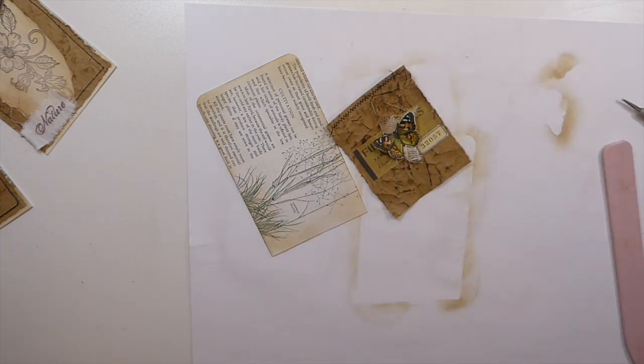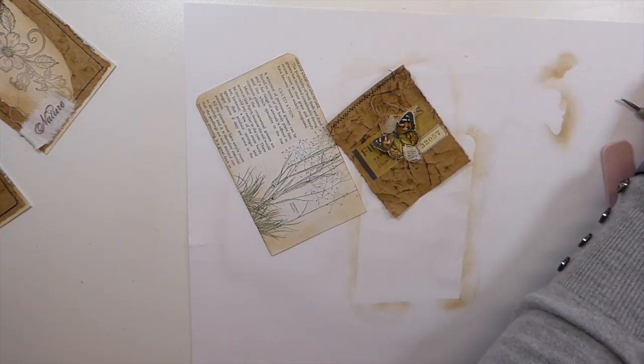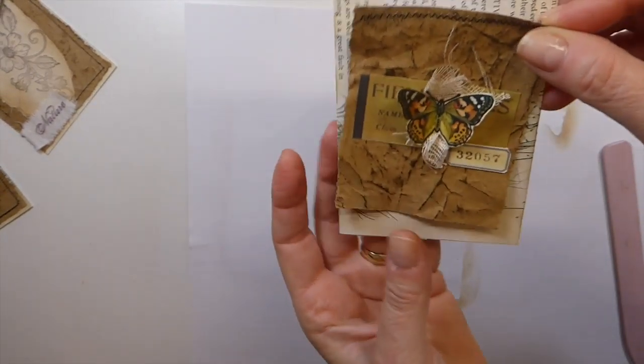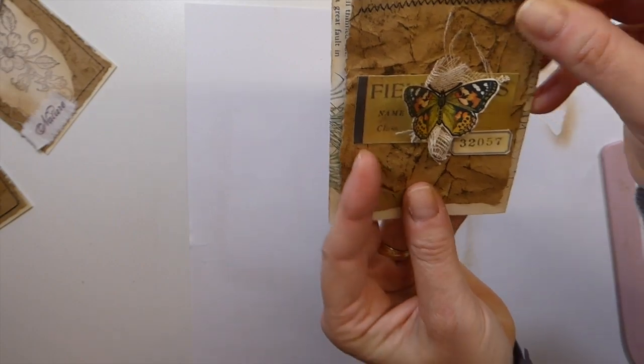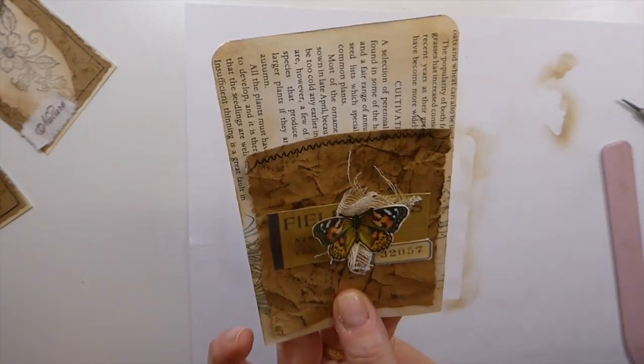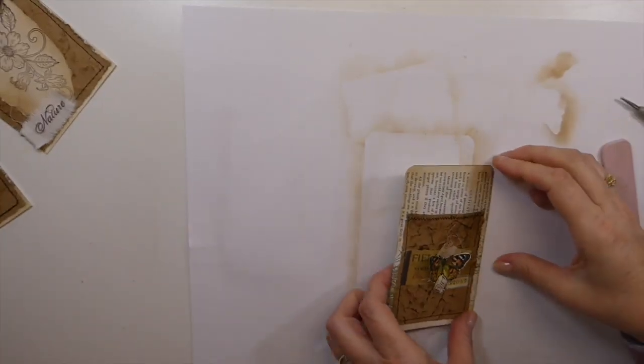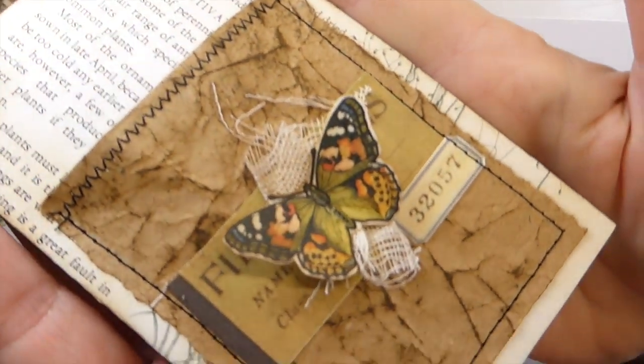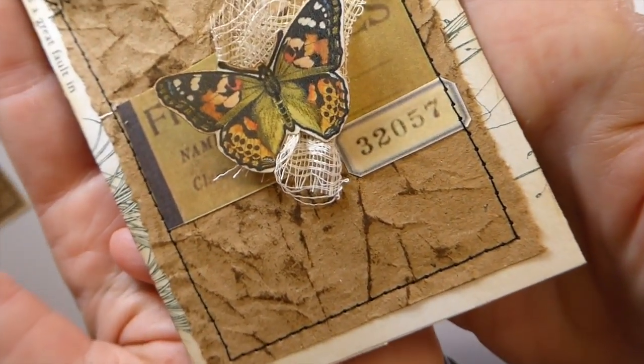And at this point guys I'm going to have to stop the camera and I'll be back because I'm going to now take this to the machine and just stitch the three sides, that way it'll form a pocket. Be right back. Okay guys, now you can see how that looks since I've run that through the machine.